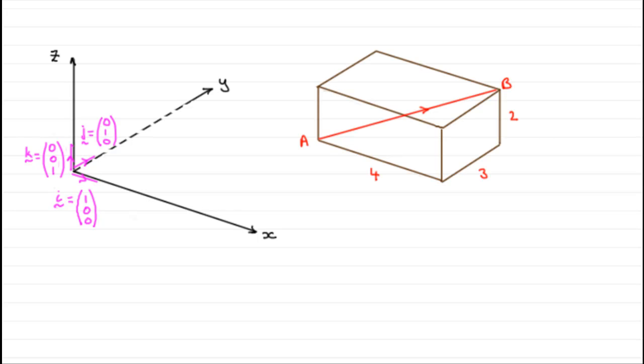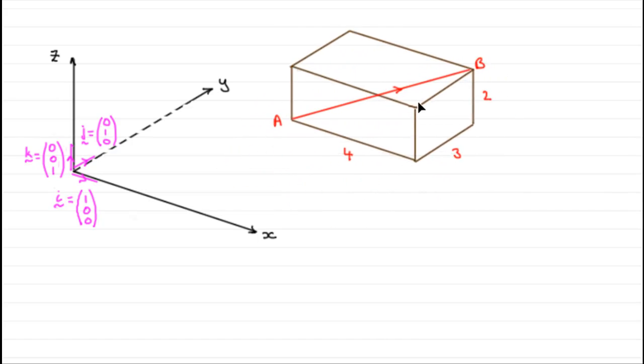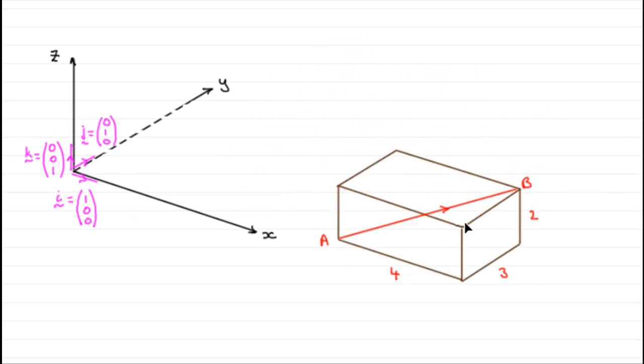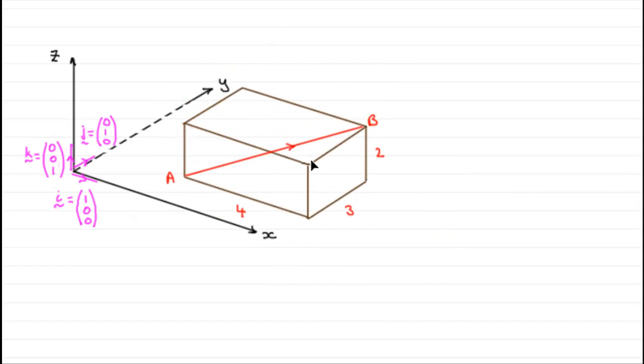And if I took a displacement vector, let's say we've got the vector AB inside this cuboid, then the vector AB is going to be 4i plus 3j plus 2k. But we can move this displacement vector around. The vector A to B is still going to always be exactly the same, yet the coordinates of A and B are always going to change.